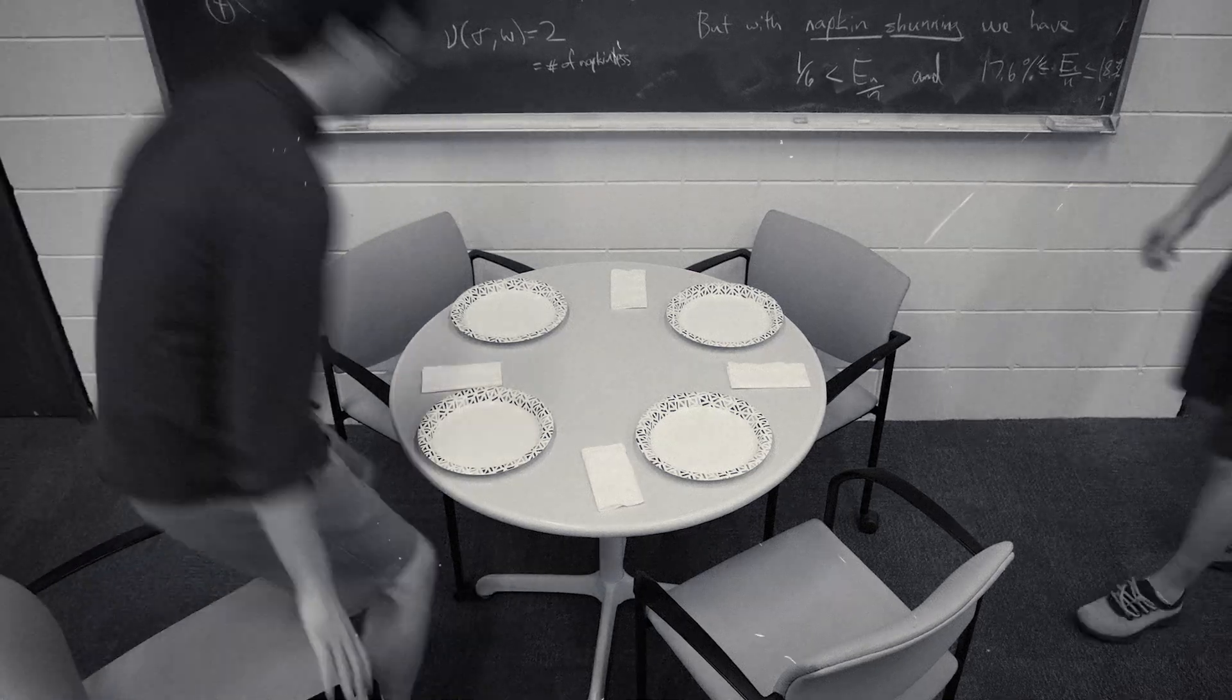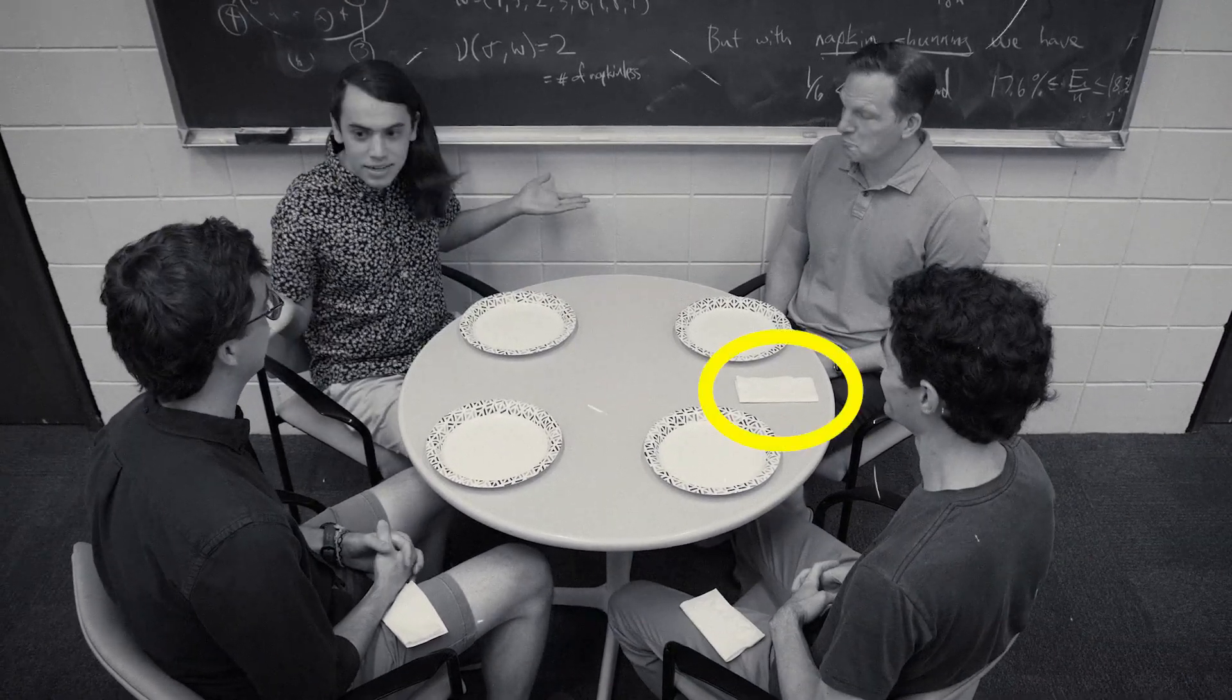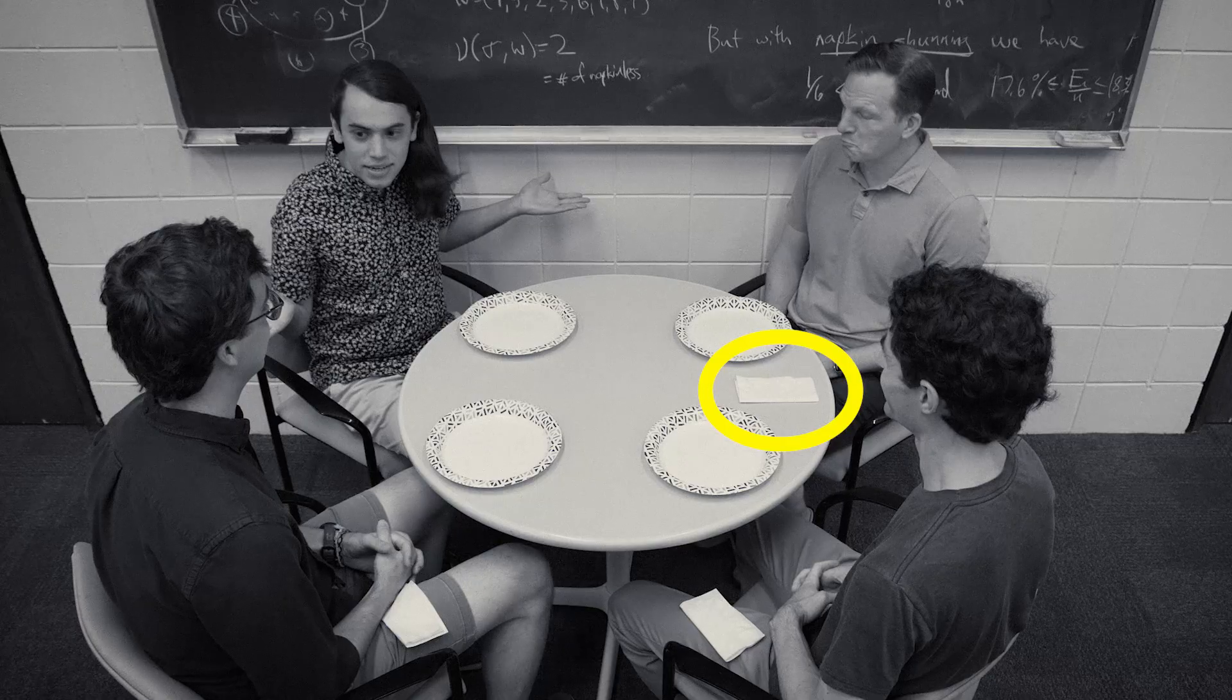is to notice that for every napkin-less diner on the table, somewhere else on the table is a napkin that is sort of isolated, that nobody takes. And so they focused in their algorithm on the napkins.